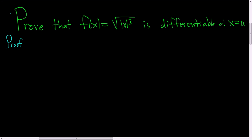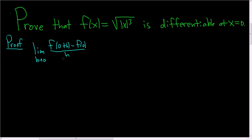To do this, we're just going to use the definition of what it means for a function to be differentiable at 0. So we're just going to look at the limit as h approaches 0 of f of 0 plus h minus f of 0, all divided by h. So if we show that this limit exists, we're done with the proof. This is equal to the limit as h approaches 0 of f of h minus f of 0.